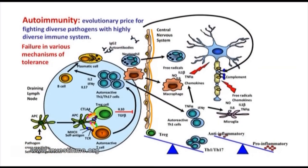What happens when we lose tolerance against self-antigens? The consequence is autoimmunity. This is probably the evolutionary price we pay for being protected against many pathogens. This is the case in multiple sclerosis, and it is similar for most autoimmune diseases.